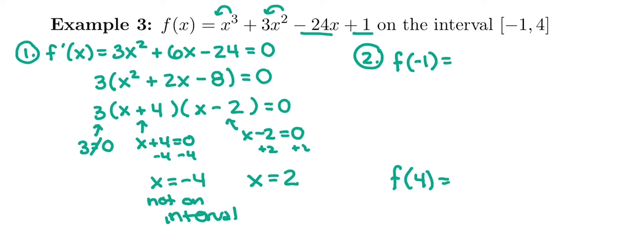But my next critical number is 2. Is 2 on the interval between negative 1 and 4? Yes. So we do have to test 2. We do not have to test negative 4, it's not on our interval. We don't care if it has a higher or lower y value. We can only look between negative 1 and 4 and find the absolute highest y value and the absolute lowest y value.